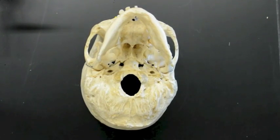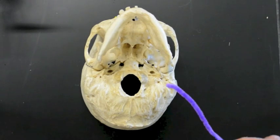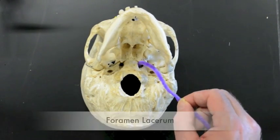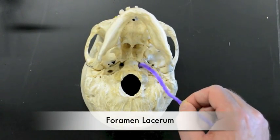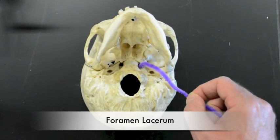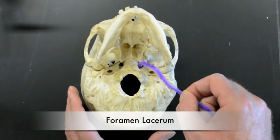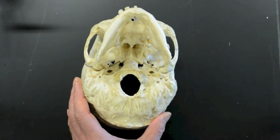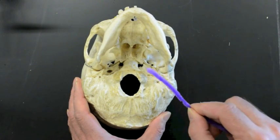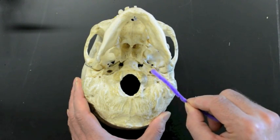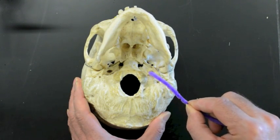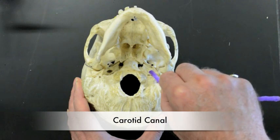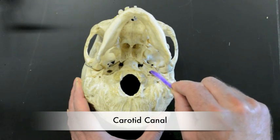Then medial, we have the foramen lacerum, and lacerum means torn or ragged. Then going back a little bit, we have the carotid canal, right here.